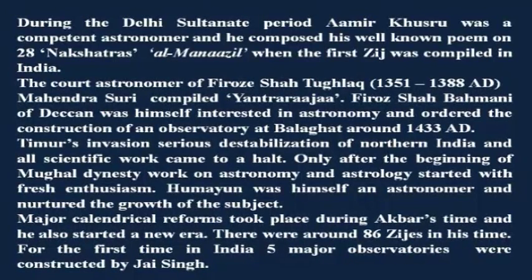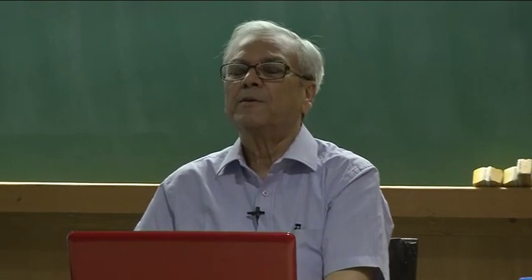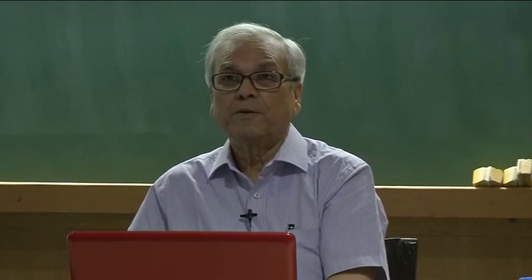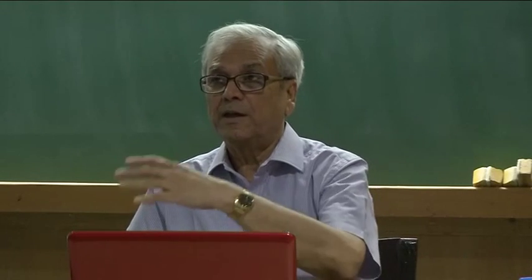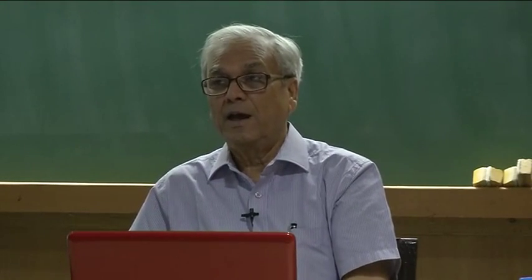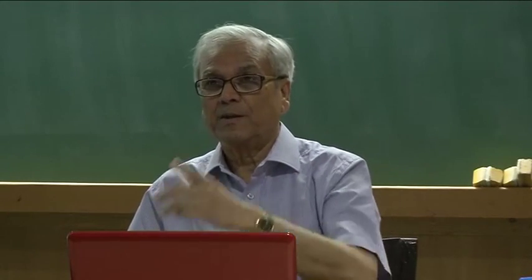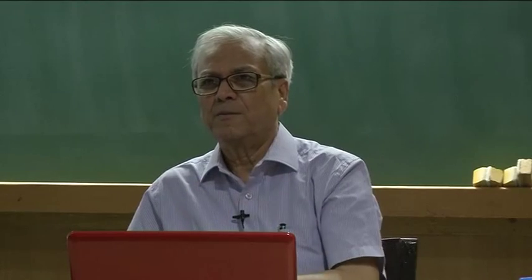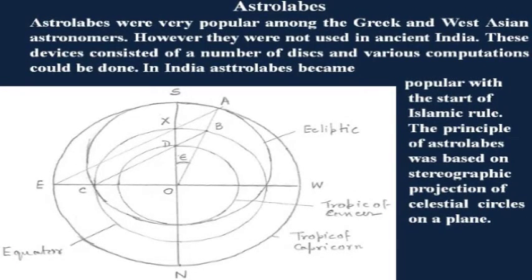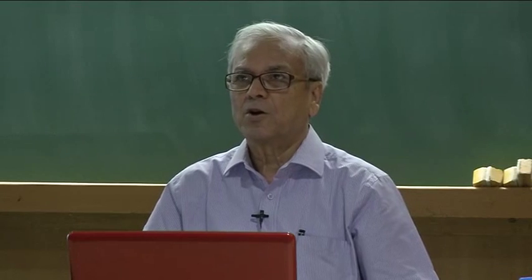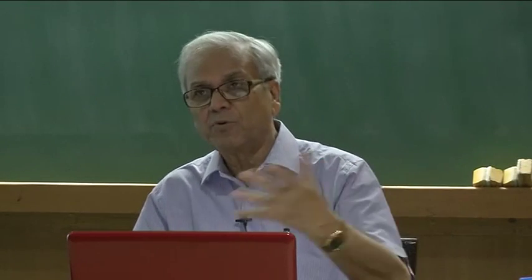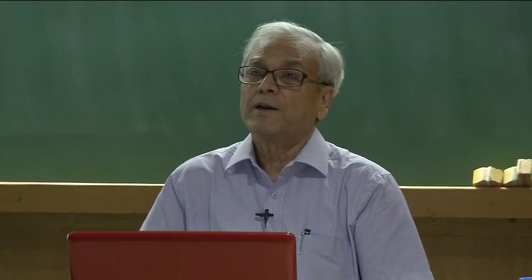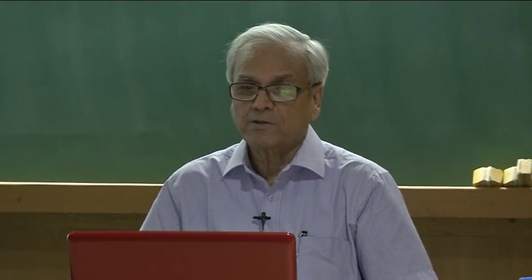I will now discuss the instruments used for naked eye astronomy. Jai Singh's observatories, except one, had an accuracy of three minutes of arc, and the biggest one — in Parliament Street — had an accuracy of one minute of arc. One instrument very popular amongst West Asian and Hellenistic astronomers was the astrolabe, which came to India along with Muslim rulers. In Indian ancient astronomy, astrolabes are not mentioned. These devices were used for astronomical and astrological computations, consisting of a number of disks with various markings, somewhat like a slide rule, with which many calculations could be done.